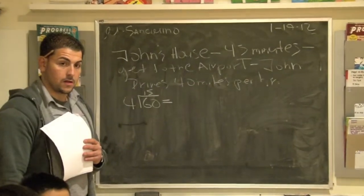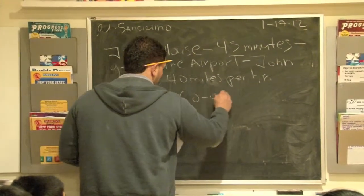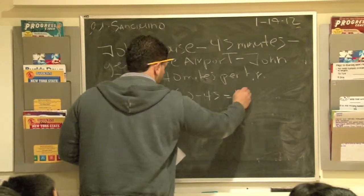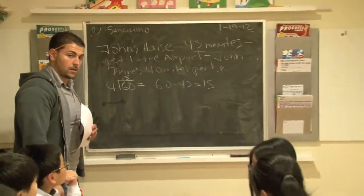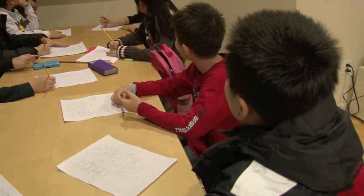So, 60 minus 45, 60 minus 45 gives me what? 15. 15. Okay. So, you take away one fourth of the 40 miles because 45 minutes is less than one hour. Okay, perfect. Does everybody agree?